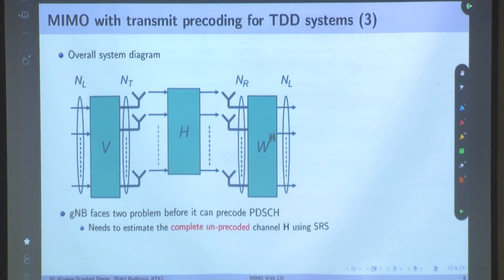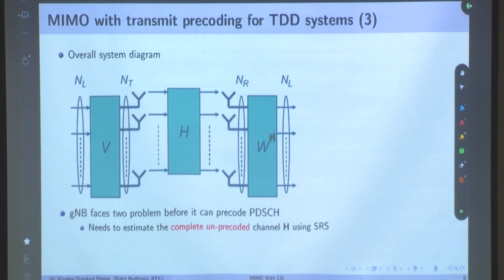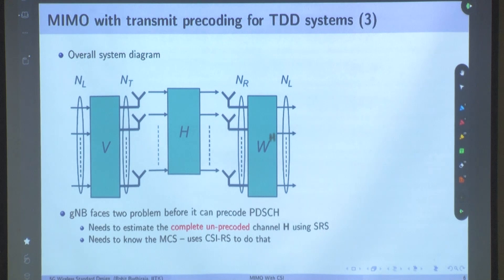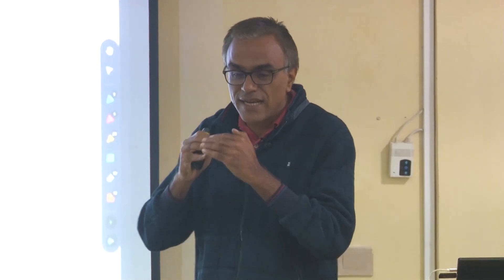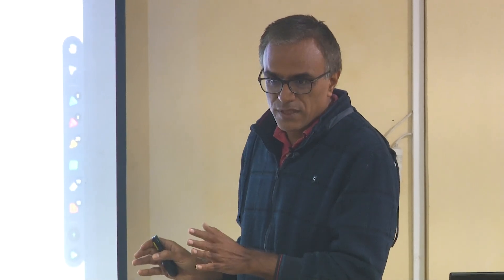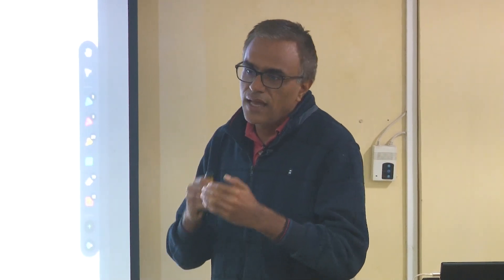How is the channel going to be estimated? Using SRS — because we assume a TDD system, the base station estimates the uplink channel, which is the same as the downlink channel. The base station estimates the complete channel H. Then UE transmits SRS, and the base station estimates H. This is the first problem we are going to solve.